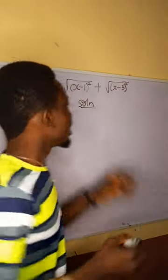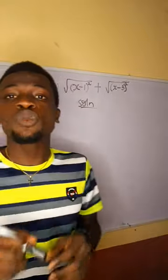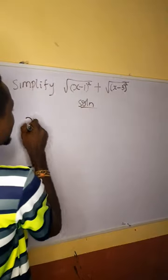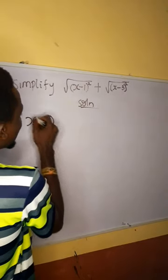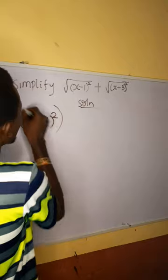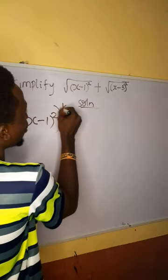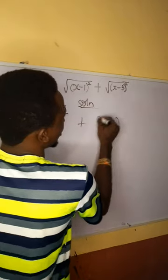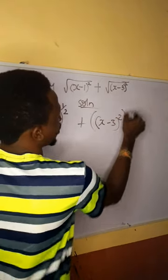Now this is very simple. If you don't really know, once you see square root, it means power of half. So I can first of all reduce this to x minus 1 raised to power 2 raised to power 1/2. Square root means the power of half. Plus the same thing here, x minus 3 raised to power 2 and raised to power of half.